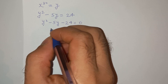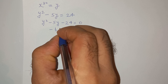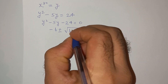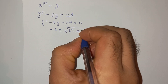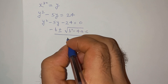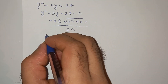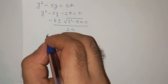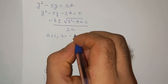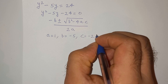We know that for the quadratic equation the roots are minus b plus-minus root of b square minus 4ac, divided by 2a. Here a equals to 1, b equals to minus 5, and c equals to minus 24.